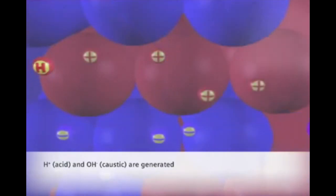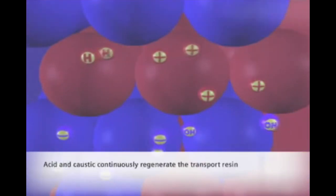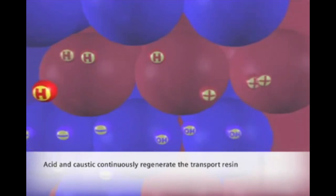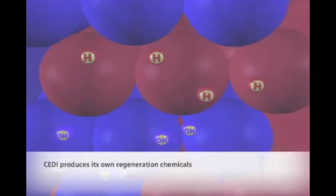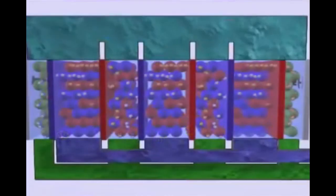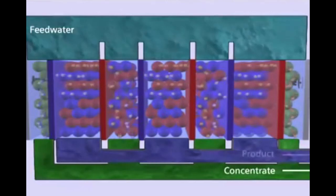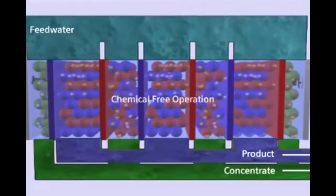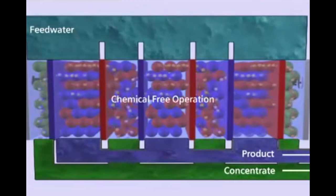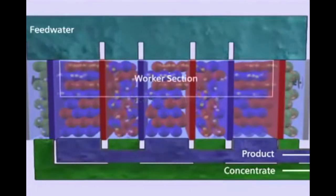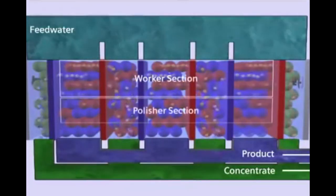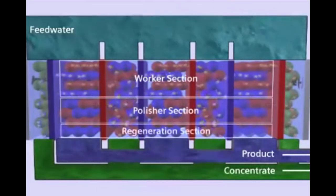The acid and caustic generated in the module regenerate the resin beads by replacing other trace ions remaining. The attachment of hydrogen and hydroxide ions to the resin beads is exactly what happens to resin beads when acid and caustic are used for regeneration in conventional deionization systems. As a result, IonPure CEDI systems do not need chemicals for regeneration. The electric potential does all the work. You essentially have a worker and polisher combined into one unit which constantly regenerates.